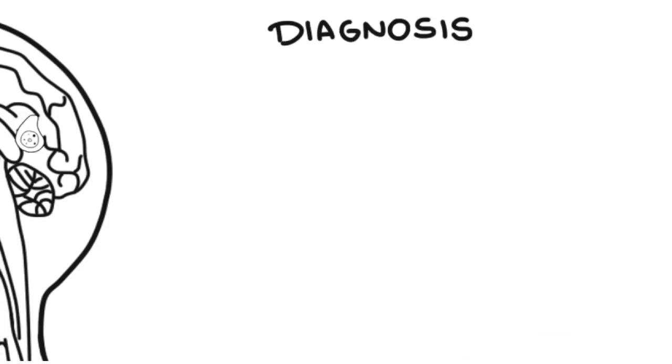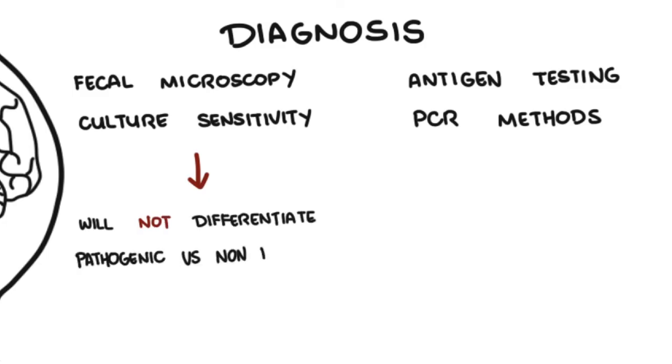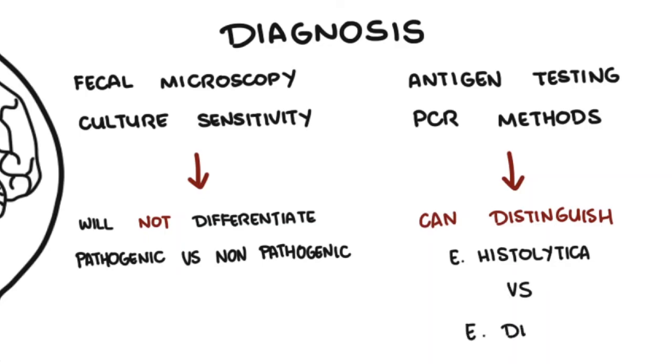Diagnosis of amoebiasis involves fecal microscopy culture sensitivity with antigen testing of the feces or PCR of the feces. Stool culture will not differentiate the pathogenic versus non-pathogenic Entamoeba species. Antigen testing of the feces and PCR of the feces are more sensitive and can distinguish between Entamoeba histolytica and other non-pathogenic Entamoeba species.